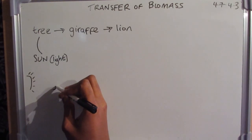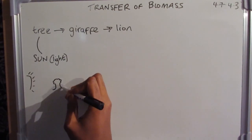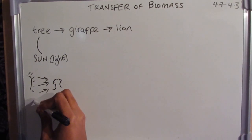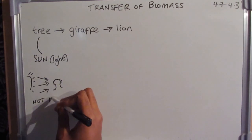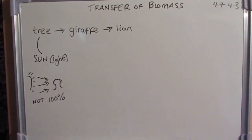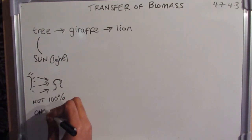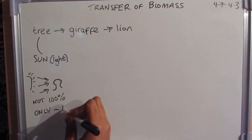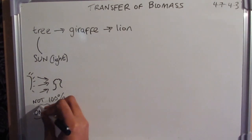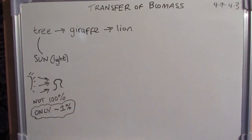For a tree (a plant), energy comes from the sun in the form of light. Not all of the energy from the sun is transferred to the leaf — there are several reasons for this, but you do not need to know them for the specification. Out of all the light available from the sun — 100% — only about 1% is taken in by the leaves, the plant, or the producer.